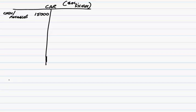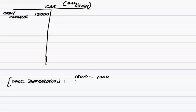At the end of the year, the first thing the accountant will do is calculate the depreciation. Now, there are two methods we could use, but here it says straight line. So straight line: we'd take the original cost of 15,000, deduct its scrap value of 1,000, and divide by its expected life of five years, which gives us 2,800 per annum.